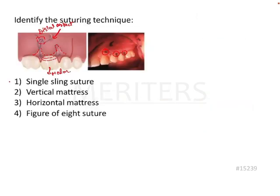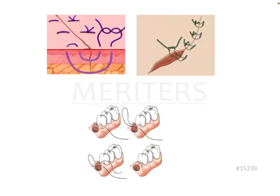The answer to this particular question is, of course, the single sling suture. If you want to discuss the other options — vertical mattress, horizontal mattress, and figure-of-8 — it would be a very detailed video, but I will give you a simple trick to identify the kind of suture.